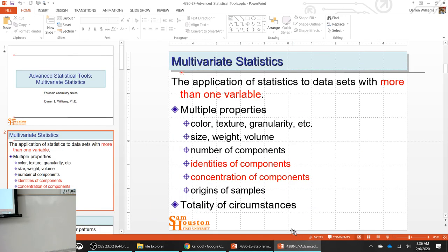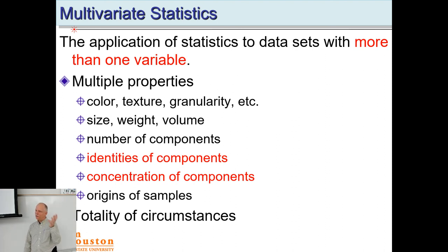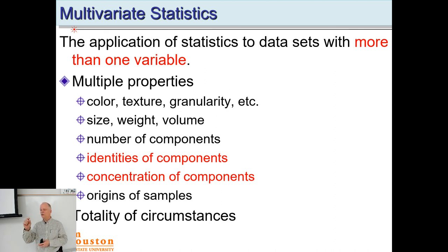Now let's look at advanced statistical tools in multivariate statistics. Multivariate means multivariable — we have more than one variable we can collect on a sample. In a drug seizure, you'd write down color, texture, packaging, and all other observations — those are all variables. Concentration is one of them. We'll be dealing with complex mixtures, not pure lab samples. Today we'll talk about three components: cocaine, procaine, and caffeine.